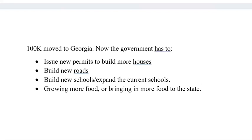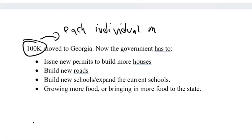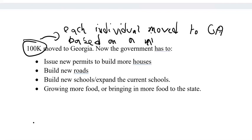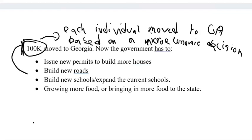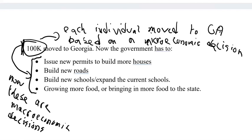Each individual moved to Georgia based on a microeconomic decision. However, their collective movement — all of them moving to Georgia — led to the government creating all these other things, which are now macroeconomic decisions. So this is how they are related to each other. Even though they are kind of distinct, microeconomics does affect macroeconomics, and macroeconomics also affects microeconomics.